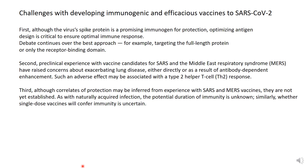For example, some of the companies are using the full-length S protein, and that might be an advantage because then it could be a target for both antibodies and T cells. Hopefully a good vaccine will induce both the humoral side and the cell-mediated side in terms of generating good T and B cells.